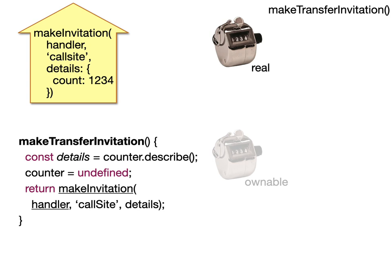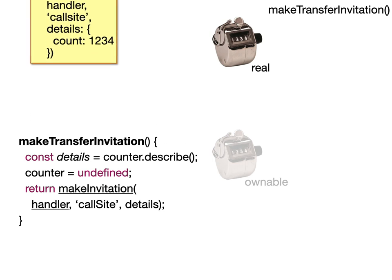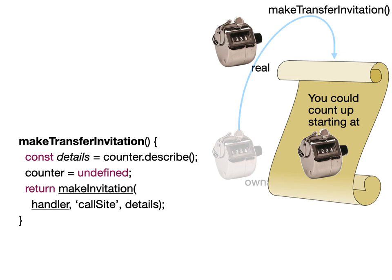We got the details by calling the real counter's described method. We then use that in the invitation, which shows the count at the moment is one, two, three, four. Having sent off the makeInvitation, we get back this invitation, and this invitation is an e-right.